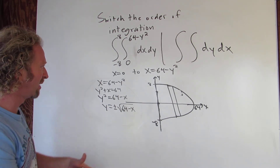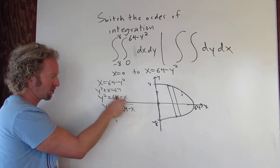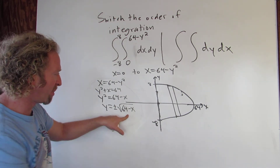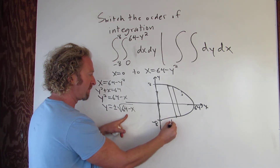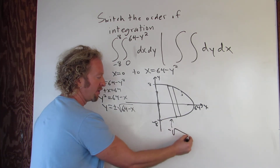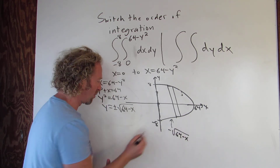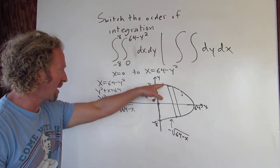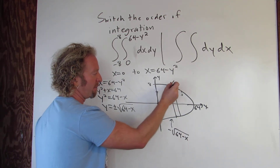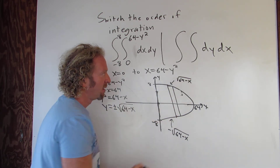Let's verify: add y squared, subtract x, take the square root, you get plus or minus. So the bottom curve is y equals negative square root of 64 minus x, and the top curve is y equals positive square root of 64 minus x.